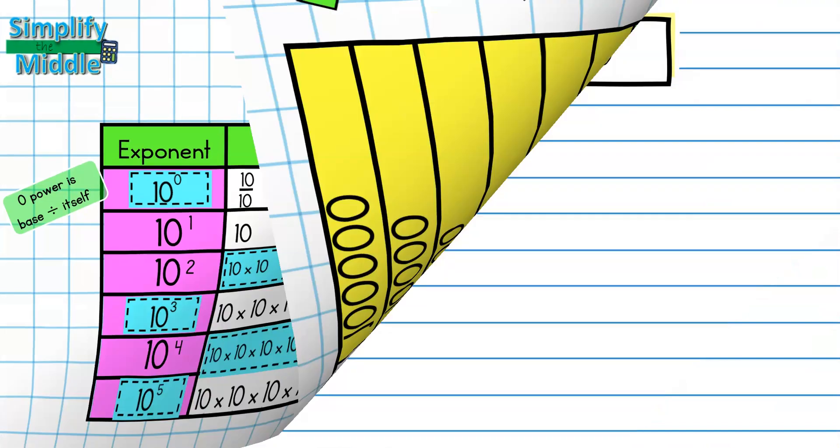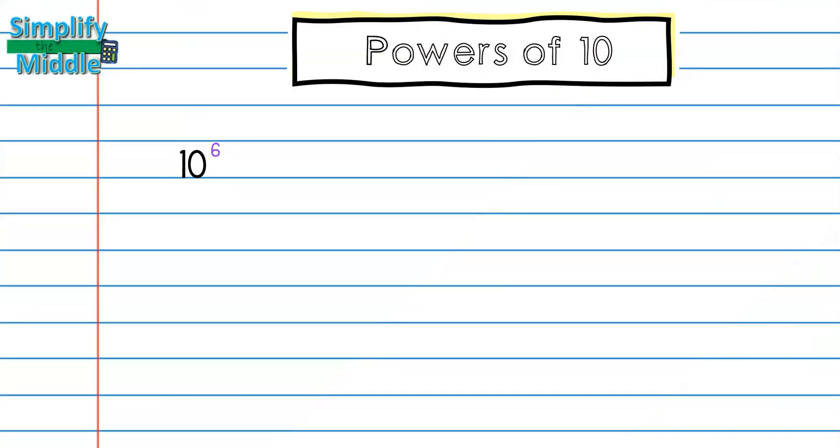Let's try an example of this. Here we have 10 to the sixth power. Because it is raised to the sixth power, I know that I am going to be writing 10 six times. I learned from my observations in the table that the exponent is going to match the number of 0s in the standard form.